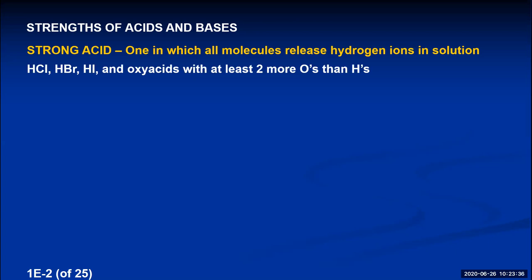We have a lot of acids that have oxygens in their formula — those are called oxy acids. As long as their formula has at least two more oxygens than hydrogens, they will behave like HCl, HBr, and HI and 100% ionize. For example, nitric acid has three O's and one H — that's two more O's than H — so it's a strong acid. All 100 molecules ionize, producing 100 hydrogen ions.